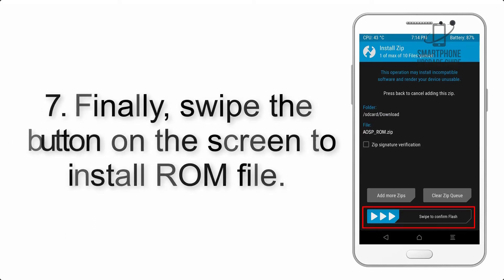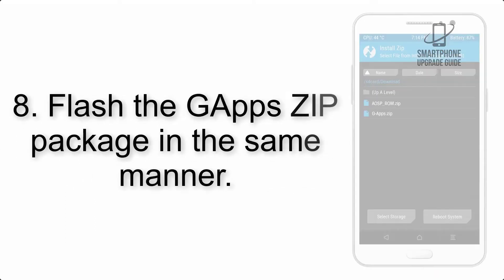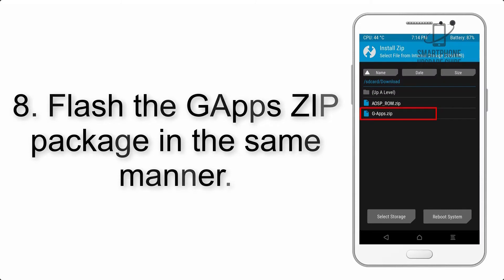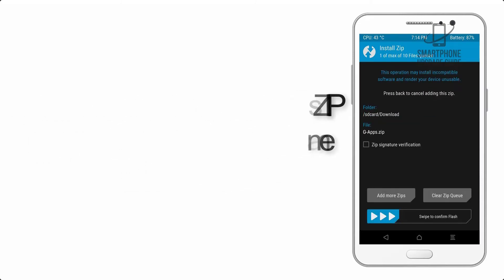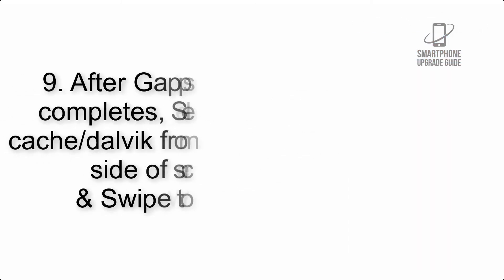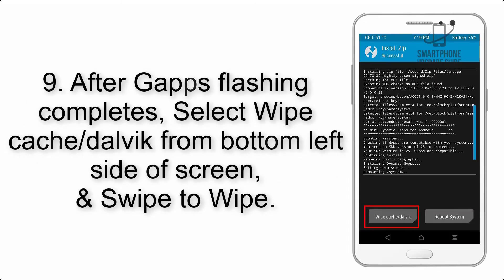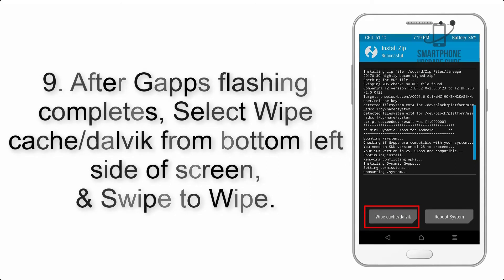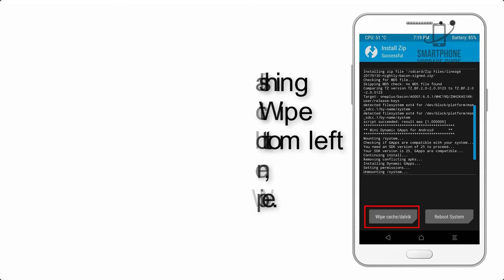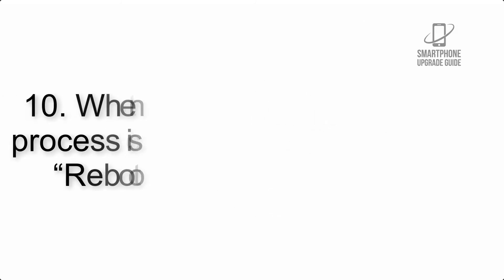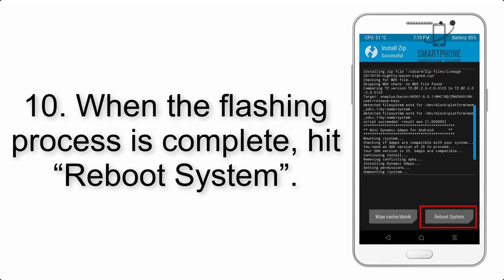Step 7: Swipe the button on the screen to install the ROM file. Step 8: Flash the GApps zip package in the same manner. Step 9: After GApps flashing completes, select Wipe Cache and Dalvik from the bottom left side of the screen and swipe to wipe.